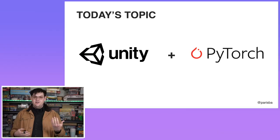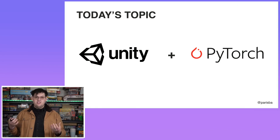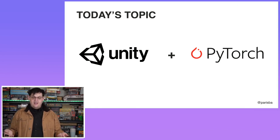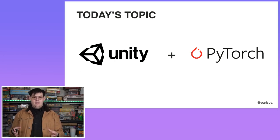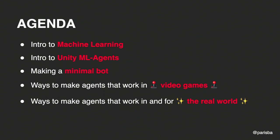Today's talk is about Unity and machine learning. Specifically, we're going to talk about Unity and PyTorch. PyTorch is a framework released by Facebook quite a few years ago and has become one of the de facto standards for doing machine learning using Python. The other one you may have heard of is TensorFlow. Everything we're talking about today uses PyTorch under the hood, though we won't go deep into it. Here's the agenda: we'll cover a little bit about machine learning, a Unity package called ML Agents, making a little bot using ML Agents, and then what you could do with this in video games and non-game uses.